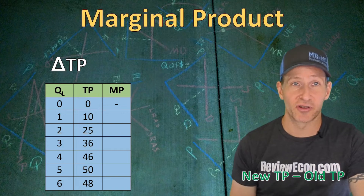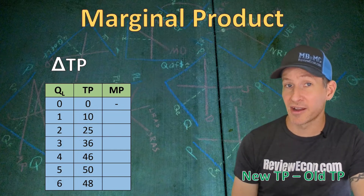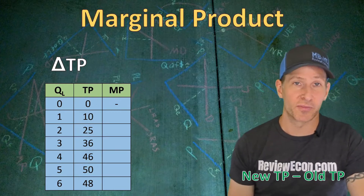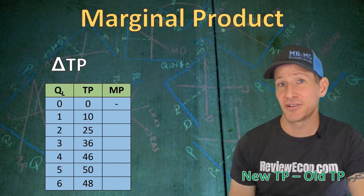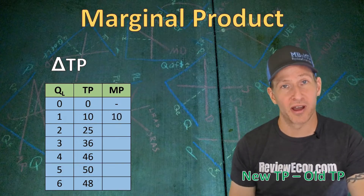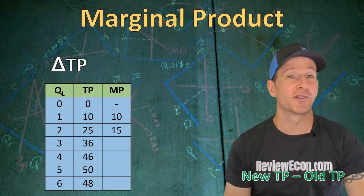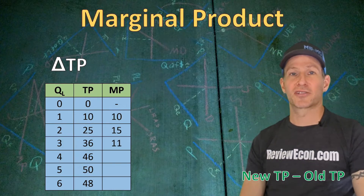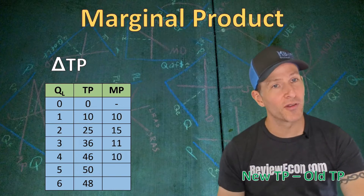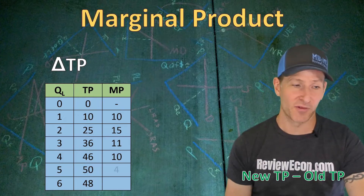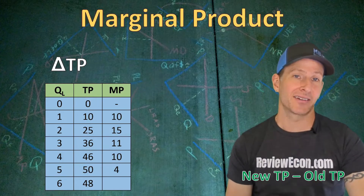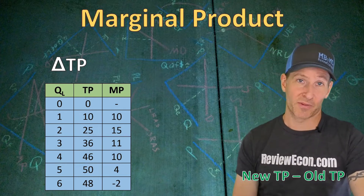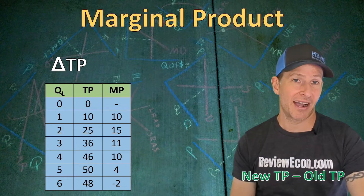The formula is: new total product minus old total product. Hiring that first worker, total product goes from zero to 10 units — a marginal product of 10. Hiring the second worker increases total product by 15 — a marginal product of 15. The third worker has a marginal product of 11, the fourth a marginal product of 10, the fifth a marginal product of 4, and the sixth worker has a marginal product of negative 2 because total product actually decreases by 2 units from hiring that sixth worker.